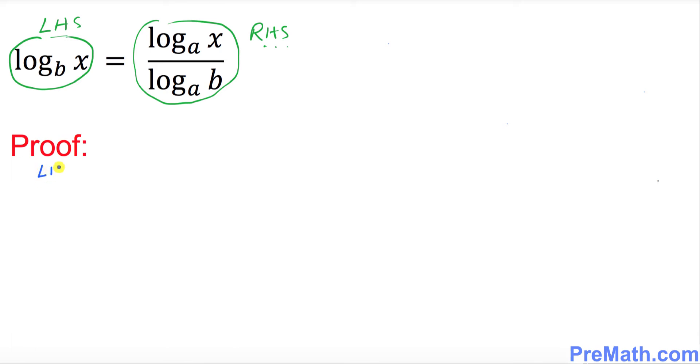LHS stands for left hand side, and left hand side in our case is log of x with the base b, isn't it? I want to let's say that this is equal to some variable y. So this is some variable y. I want to call this equation number one.